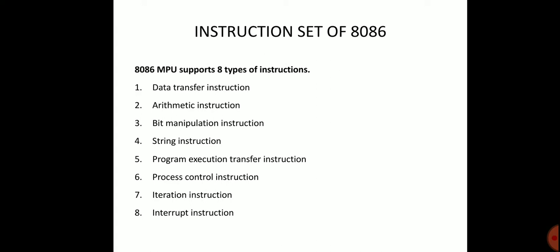The 8086 microprocessor is a 16-bit processor. Every instruction and data operand — to move, copy, add, or compare — follows eight types of instruction sets: (1) Data Transfer, (2) Arithmetic, (3) Bit Manipulation, (4) String, (5) Program Execution Transfer, (6) Process Control, (7) Iteration, and (8) Interrupt instructions.